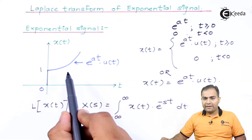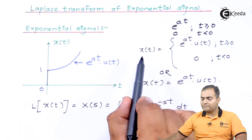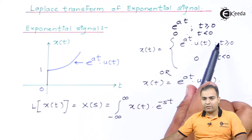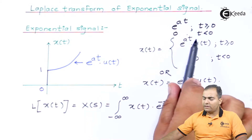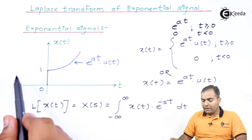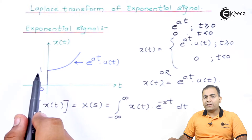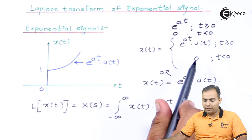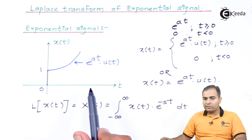I have written the equation for this right-handed exponential signal as e to the power at times u(t), which is valid from t = 0 to infinity. For the left-hand side, the exponential function has amplitude 0 for t < 0. Now we are going to apply the Laplace transform.